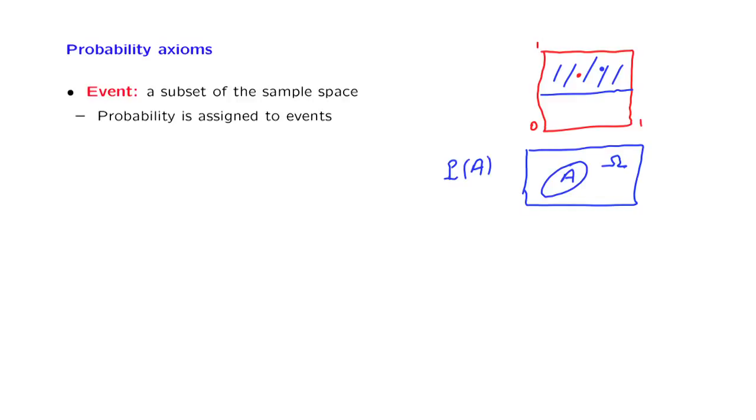So coming back, we're going to assign probabilities to the various subsets of the sample space. And here comes a piece of terminology that a subset of the sample space is called an event. Why is it called an event? Because once we carry out the experiment and we observe the outcome, either this outcome is inside the set A, and in that case we say that event A has occurred, or the outcome falls outside the set A, in which case we say that event A did not occur.